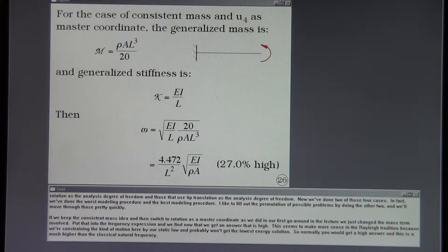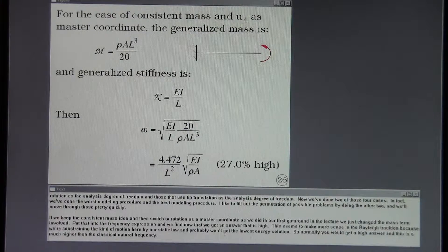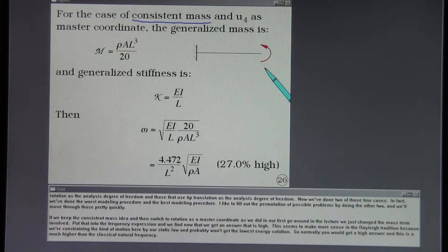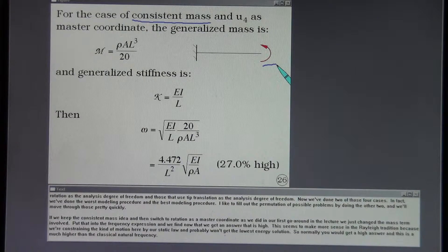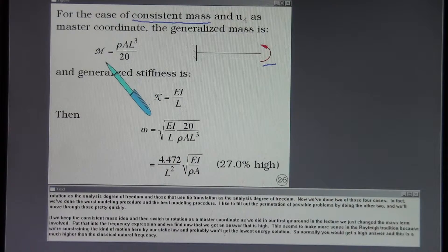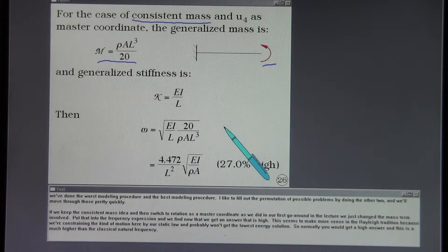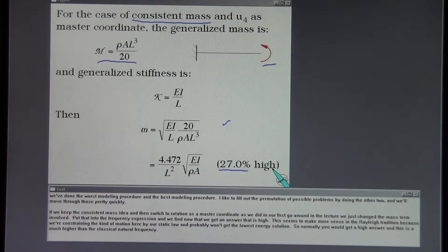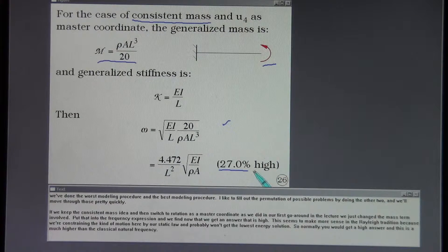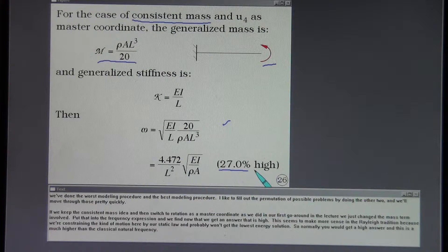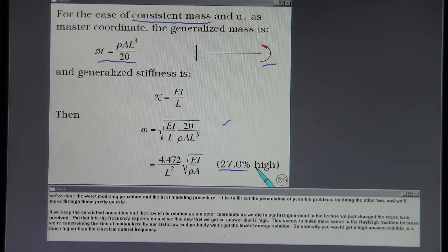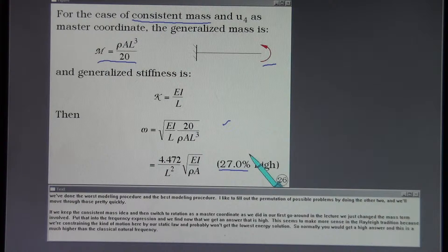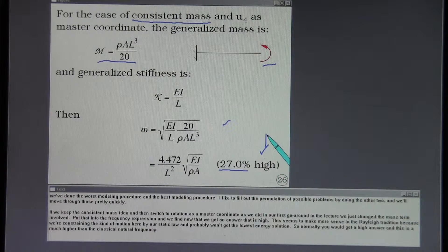If we keep the consistent mass idea and then switch to rotation as a master coordinate as we did in our first go-around in the lecture, we just change the mass term involved, put that into the frequency expression and we find now that we get an answer that is high. This seems to make more sense in the Rayleigh tradition because we're constraining the kind of motion here by our static law and probably won't get the lowest energy solution. So normally you would get a high answer and this is much higher than the classical natural frequency.